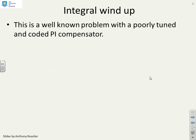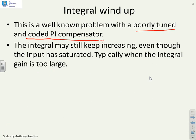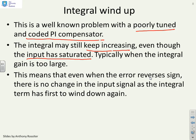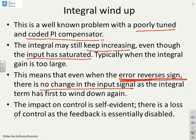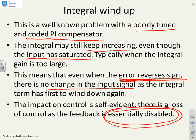Let's look at this concept of integral wind-up. It's a well-known problem with a poorly tuned and poorly coded PI compensator. In simple terms, the integral may still keep increasing even though the input has saturated and you can't actually increase the input anymore. Typically this might happen when the integral gain is too large. The problem with this is that when the error reverses sign and you expect the input to change direction, actually in the first instance you will see no change in the input signal at all because the integral term has got so large that it has to first wind down again before you can change sign. You'll see that in a minute with the simulations. The impact on control is self-evident. There's a loss of control as the feedback is essentially disabled. Changes in error in your summing junction actually have no impact on the control law because of this integral wind-up.